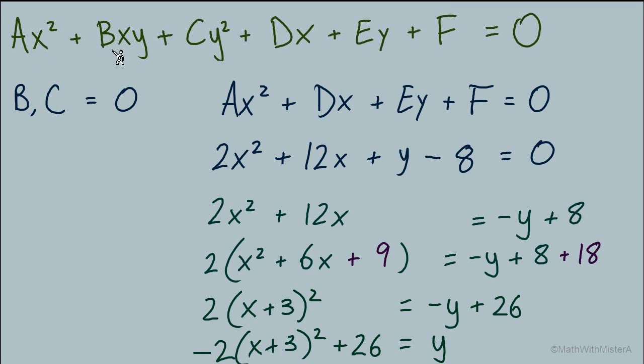So from the vertex, move down one eighth of a unit to get to the focus. Let's take a quick look at this graph. Here's the graph of this equation, -2(x + 3)² + 26. There's our vertex at (-3, 26), and it opens down because we have a negative coefficient. So now let's break down exactly what we need to observe of these coefficients a, b, c, d, e, and f to help us determine what sort of shape we have.